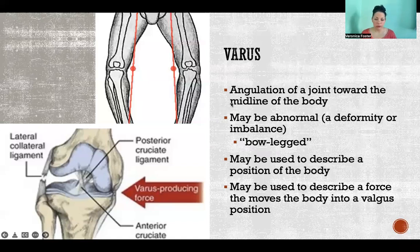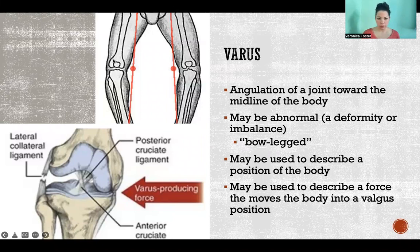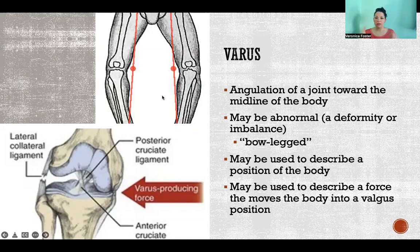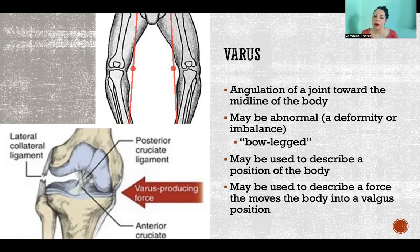Varus is the opposite — it's angulation of a joint toward the midline of the body. So in this picture here, this is an example of knee varus, also referred to as bow-legged. In that case, the angle is going in the other direction, facing the midline of the body.